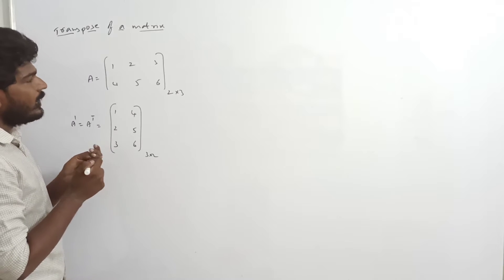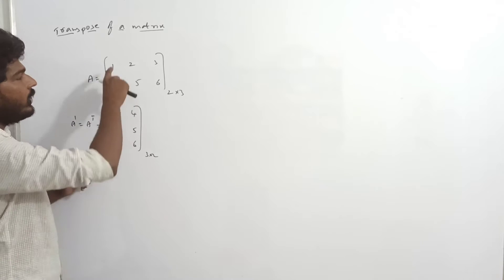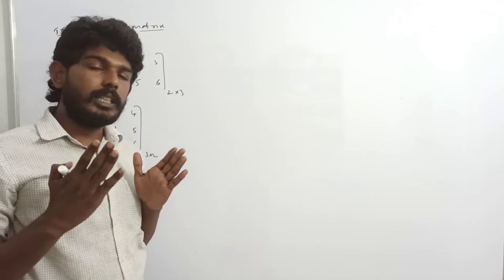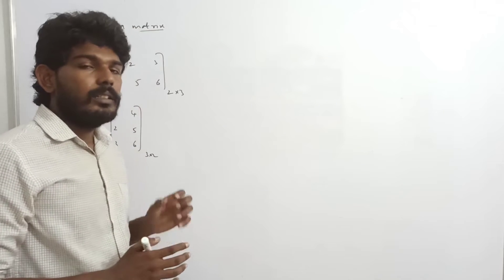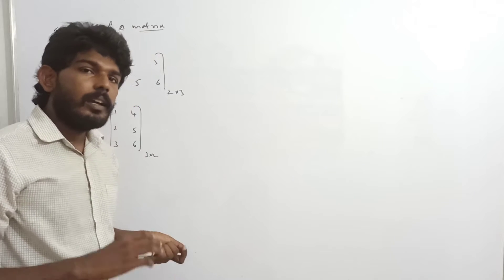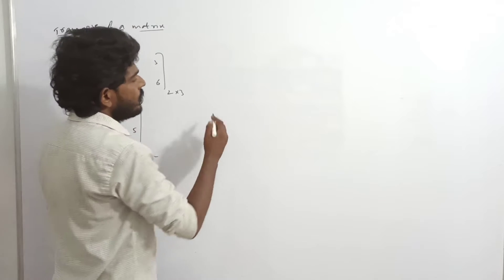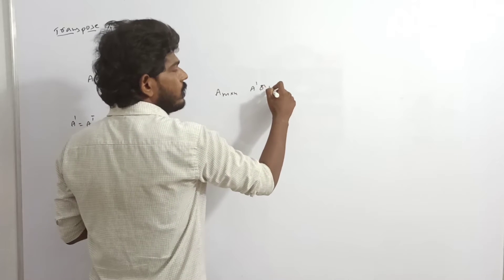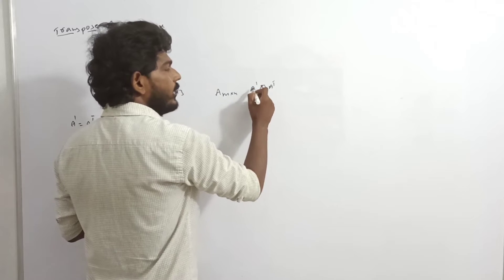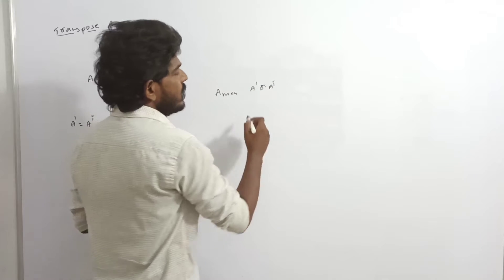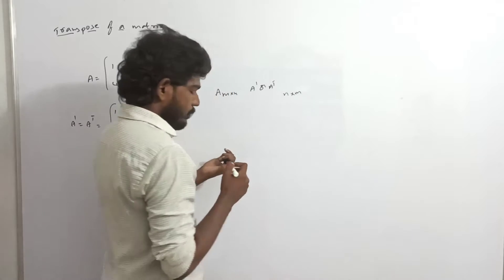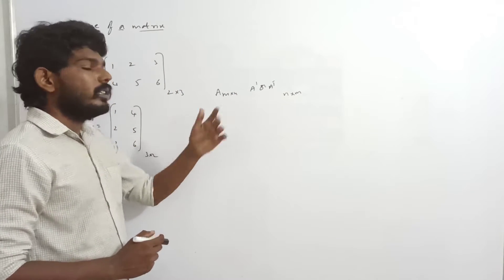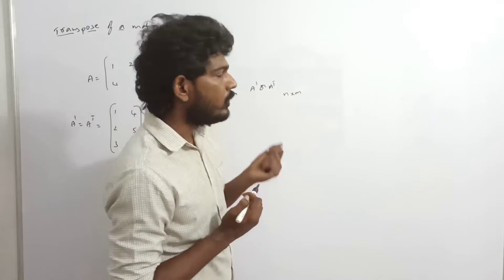The rows become columns and the columns become rows — that matrix is called the transpose of the given matrix. If A is of order M by N, then A transpose is of order N by M. So if A is 2 by 3, then A transpose is 3 by 2. Simple.